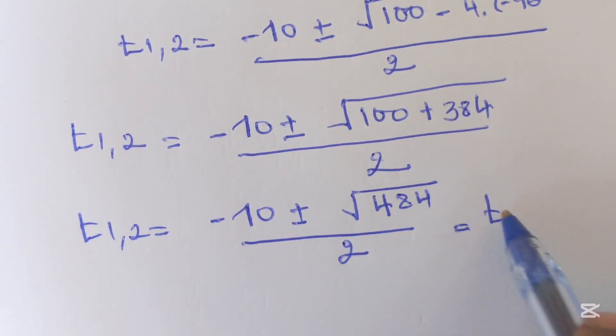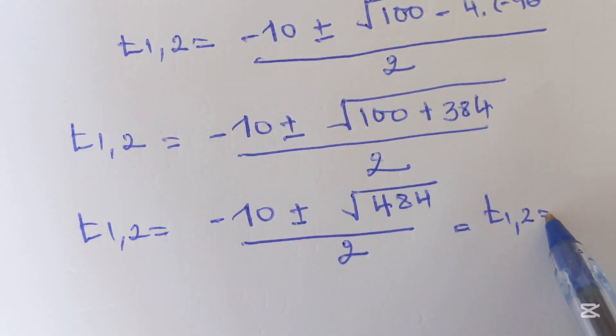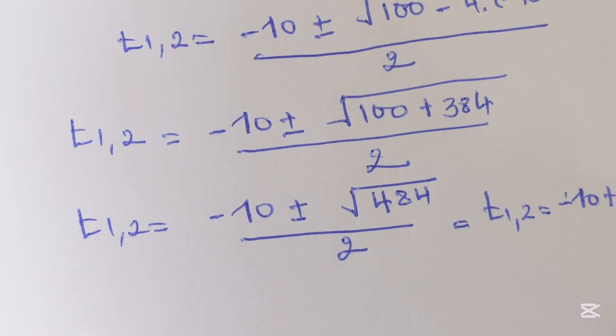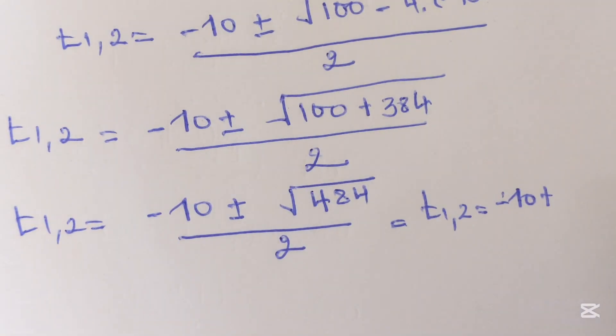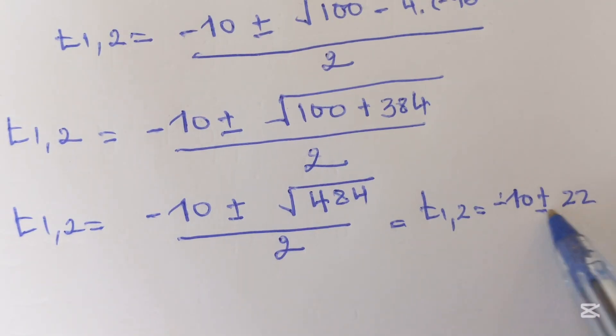So, t1 and 2 will be negative 10 plus or minus 22 over 2.